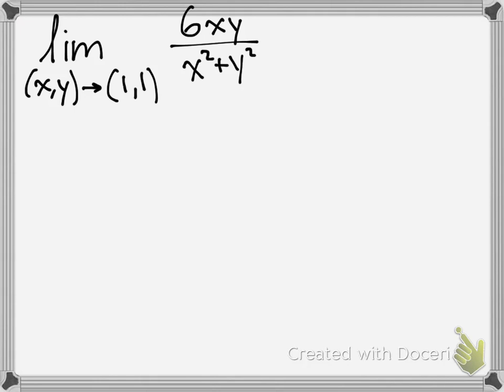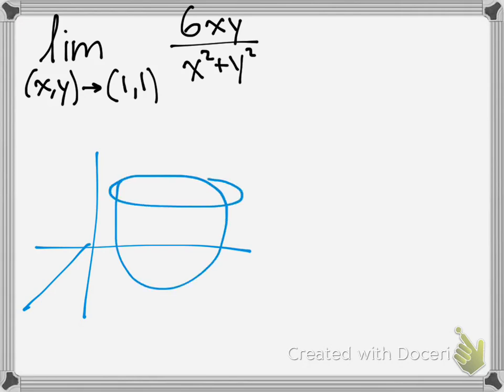If you want to understand what we're doing is on the graph here, if you have this function, oh, no, I just like using this one a lot. It's in 3D. You're approaching a certain point from one direction and another direction, and you're trying to see if the limit exists at that point.